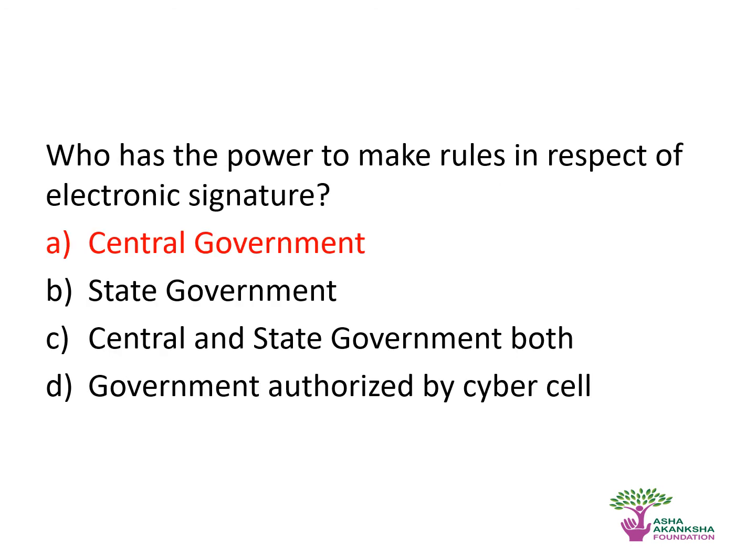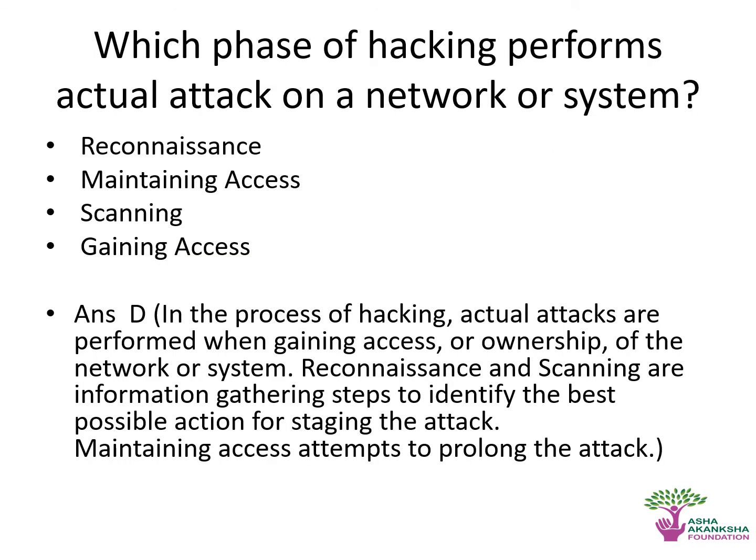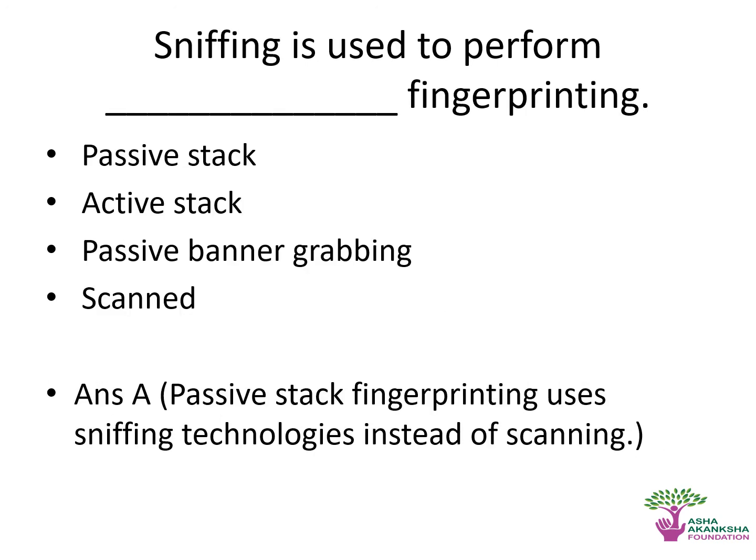Who has the power to make rules in respect of electronic signatures? The correct answer is the Central Government. Which phase of attacking performs the actual attack on a network or system? The correct answer is gaining access. Sniffing is used to perform dash fingerprinting — the correct answer is passive stack.